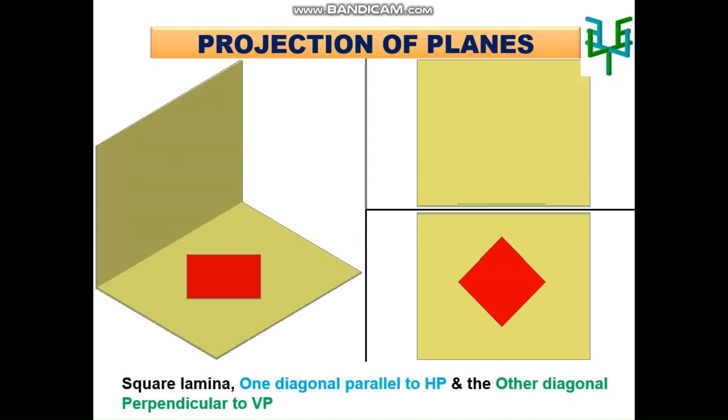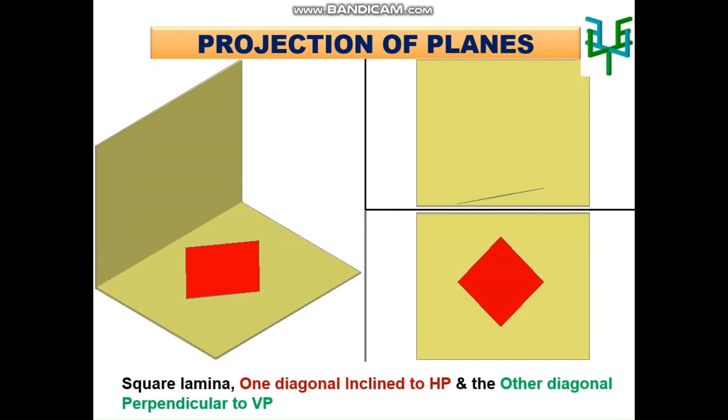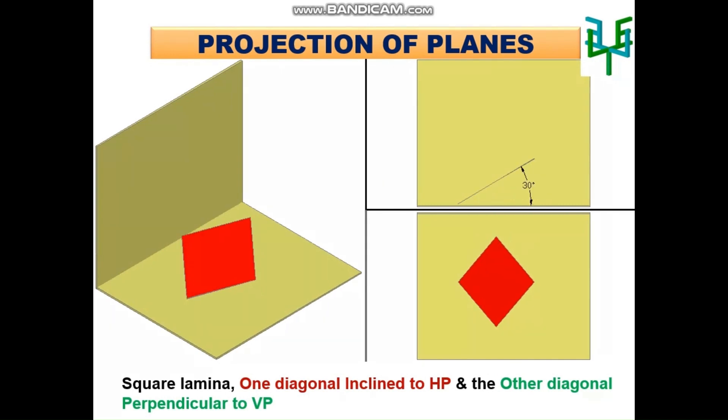When the diagonal is parallel to HP, the square lamina itself is parallel to HP. When the diagonal is perpendicular to VP, the square lamina is perpendicular to VP. Then the plane is tilted to make the diagonal incline to HP. Then the other diagonal is tilted to make it incline to VP.